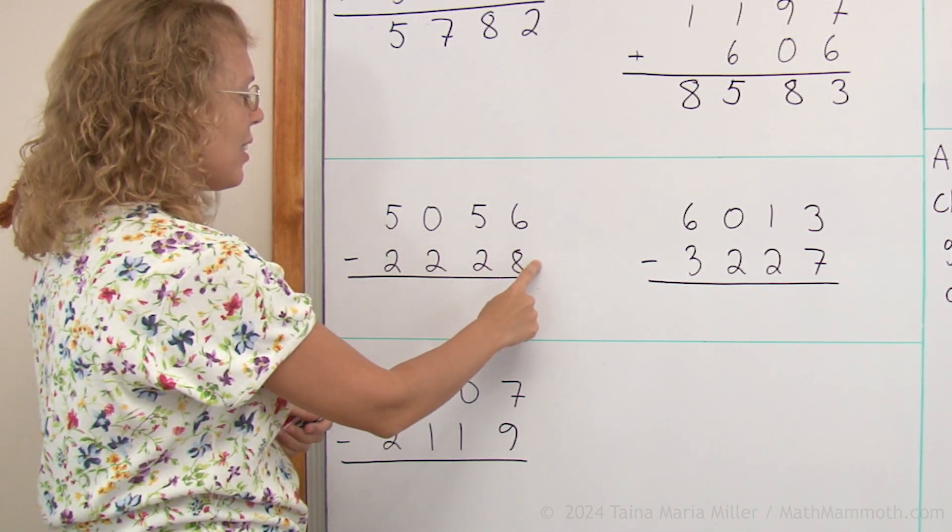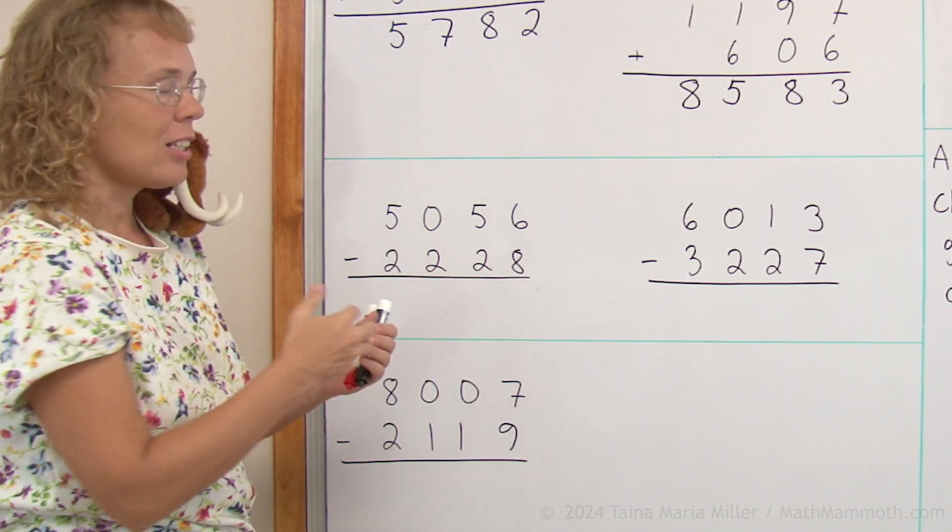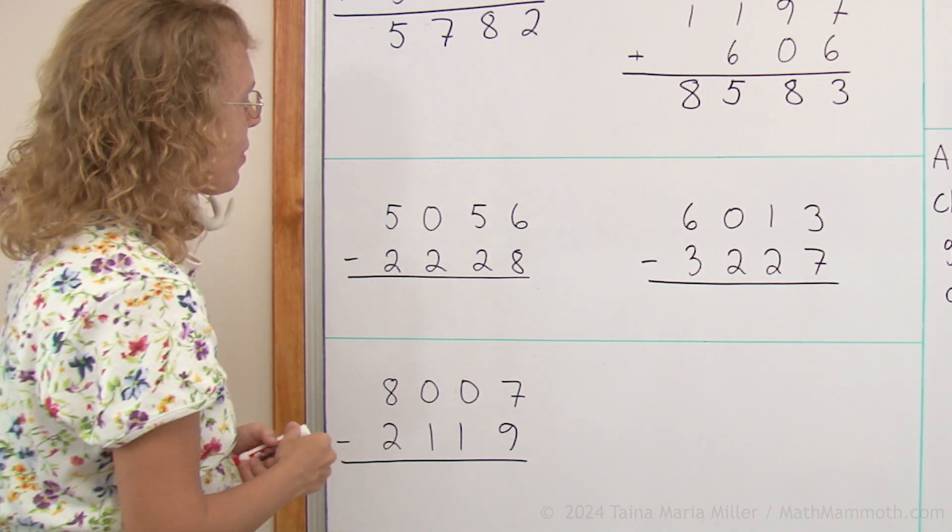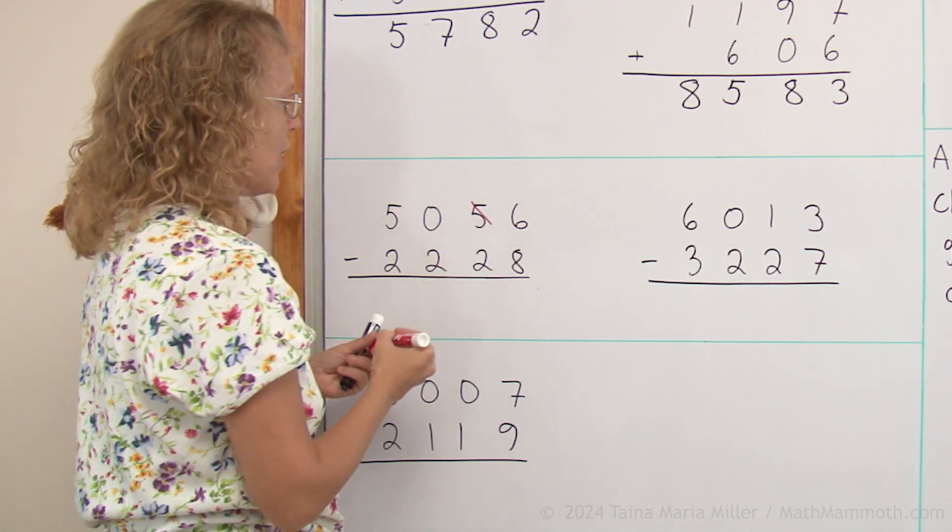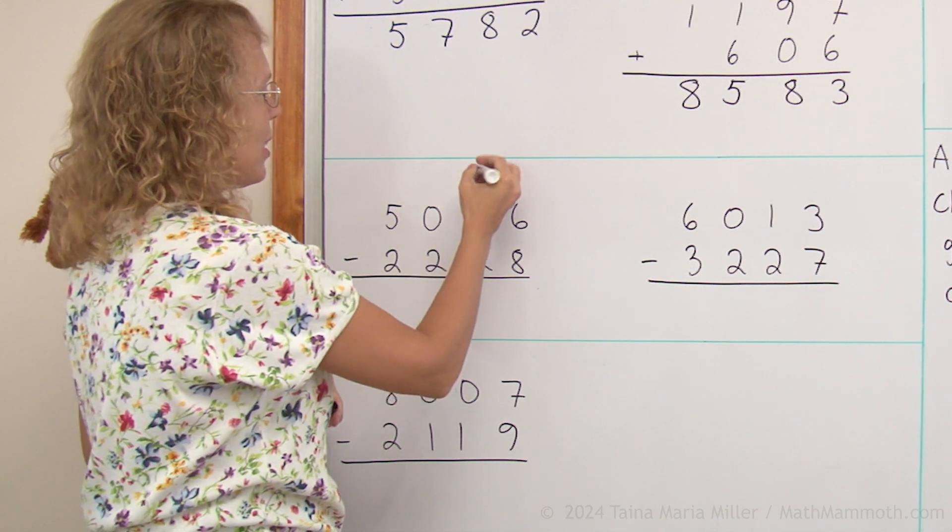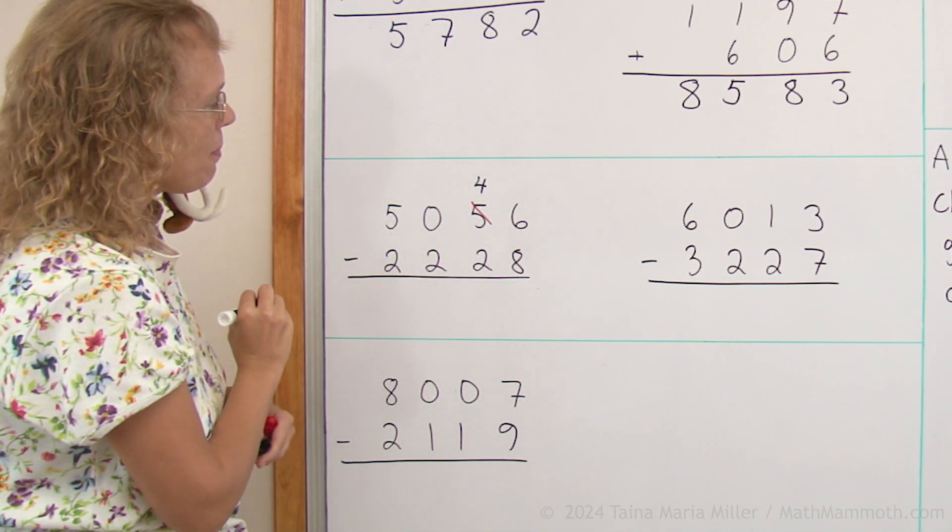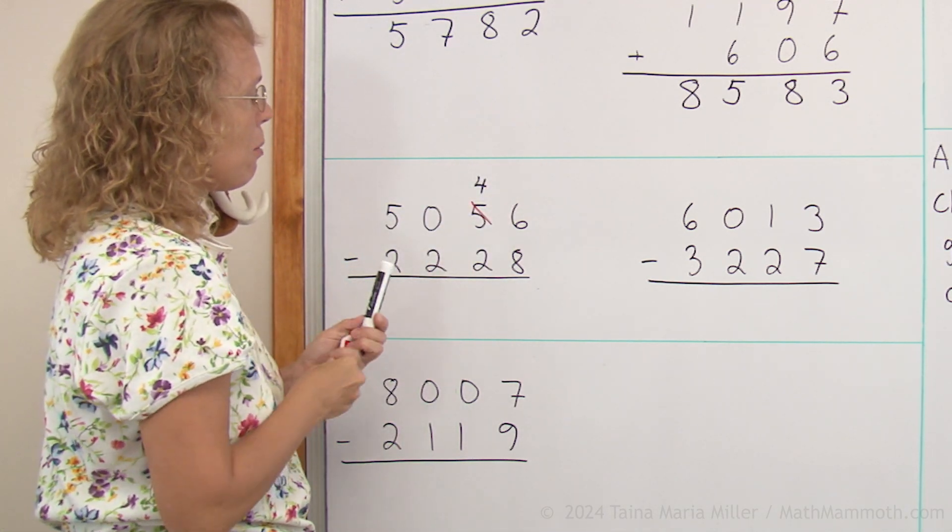Six minus eight here in the ones, I cannot do it, so I regroup. Take one of the tens, leaving four tens here.